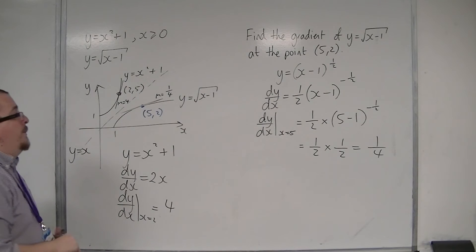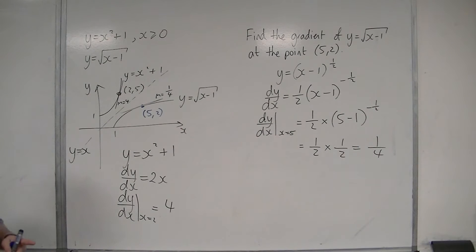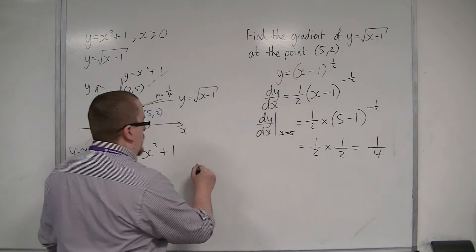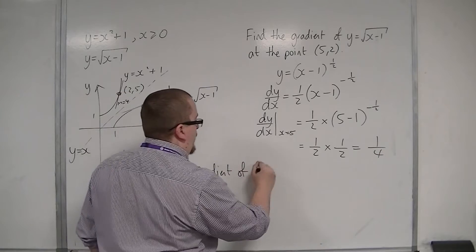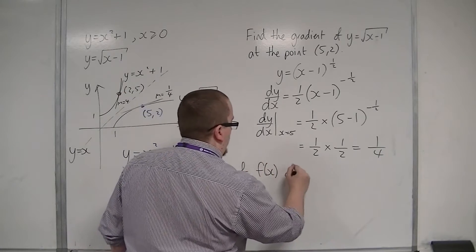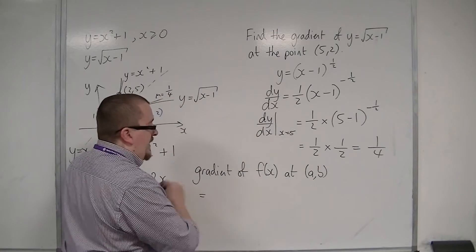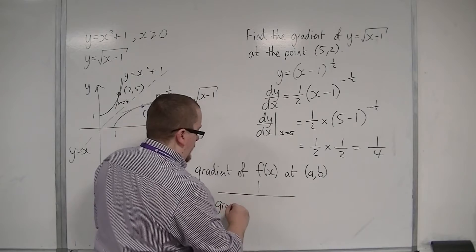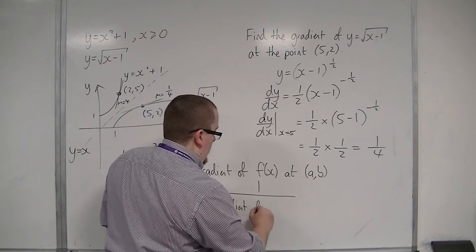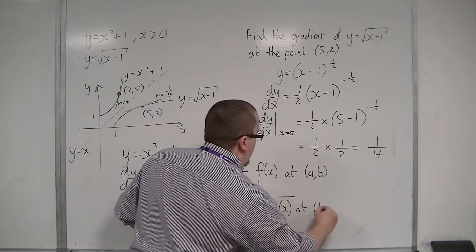Okay? So, in actual fact, they are reciprocals of one another. And this leads to a useful result. The gradient of f(x) at the coordinates (a,b) is equal to 1 over the gradient of the inverse function of x at (b,a).